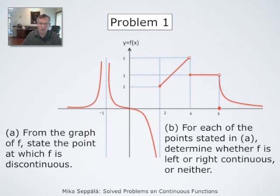The graph of the function f is the red curve given here. We must interpret this graph and figure out where the function f is discontinuous. That's part A. Part B is to figure out, of the points of discontinuity, whether f might be right or left continuous at these points, or neither.